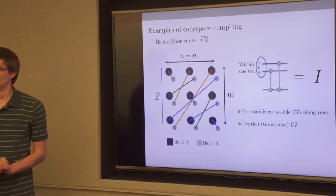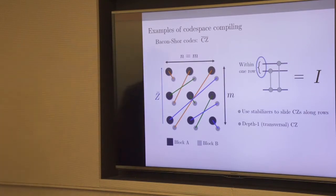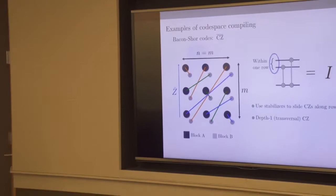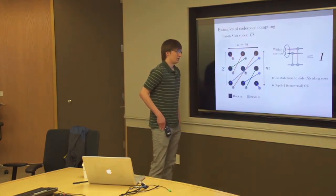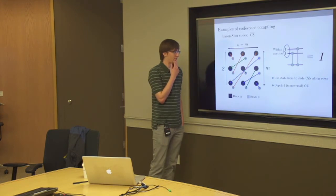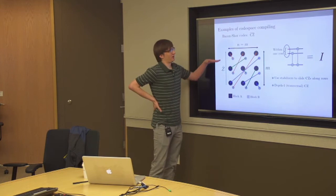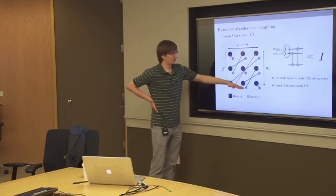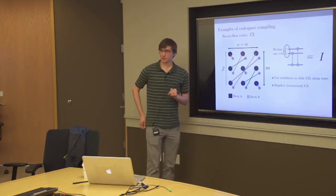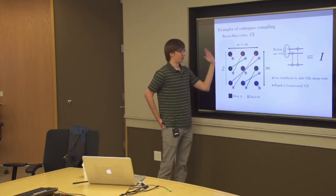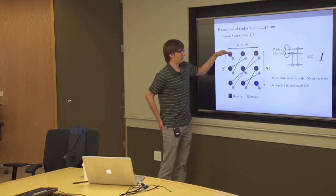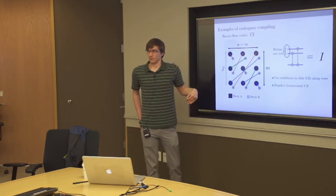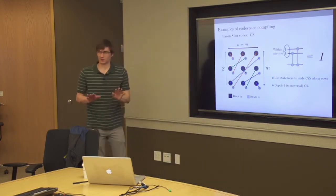Can you make it depth one while preserving correctness? No, I believe you cannot. You can prove this because there are many implementations of logical X at every row, and a proper logical controlled-Z must map logical X to logical X⊗Z. Logical X lives in one row, and if your circuit is local there's no way it can map logical X to logical Z along one column. That's the rough sketch of why it's impossible.